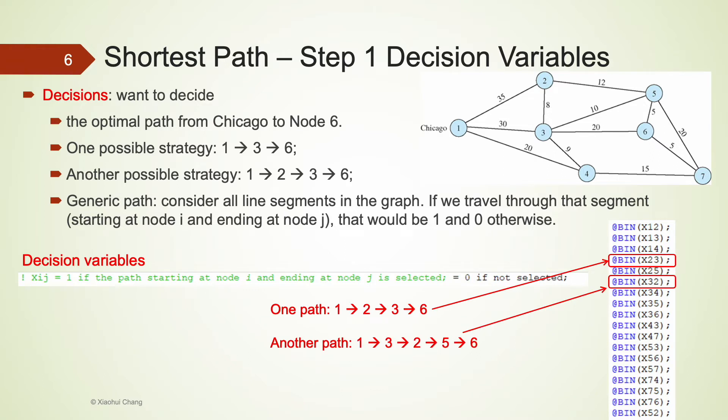It's also important to know that the line segments 2 and 3, and the line segments 3 and 2 are not the same. For example, a path could be from 1 to 2, 2 to 3, 3 to 6. Another path could be from 1 to 3, 3 to 2, 2 to 5, and then to 6. That's why we should consider line segment 2, 3 and line segment 3, 2 separately.